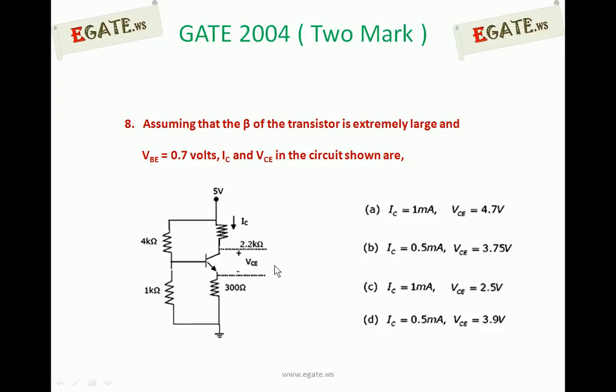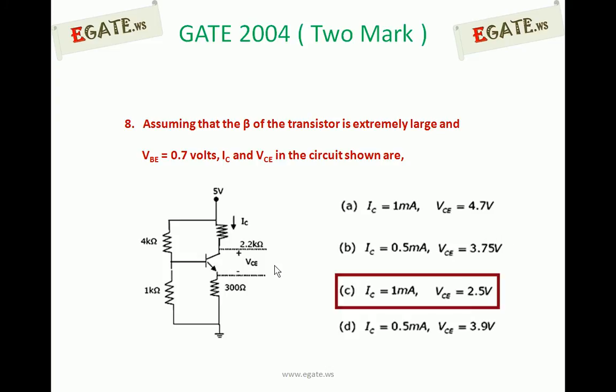What will be the values of IC and VCE? Option A: IC is 1mA, VCE is 4.7V. Option B: IC is 0.5mA, VCE is 3.75V. Option C: IC is 1mA, VCE is 2.5V. Option D: collector current is 0.5mA, VCE is 3.9V. Out of the options, the correct one is C - IC is equal to 1mA and VCE is equal to 2.5V for the given diagram.